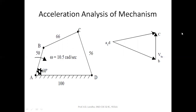Now we will see the acceleration analysis for the four-bar mechanism. This is the configuration diagram in which you will have specifications of each and every link length. For example, this is the fixed link which is having 100 mm. These are the specifications for the configuration diagram. In this diagram, link AB is having angular velocity of 10.5 radians per second. For finding the acceleration analysis, you have to first plot the velocity polygon.